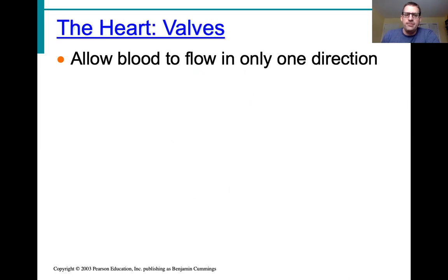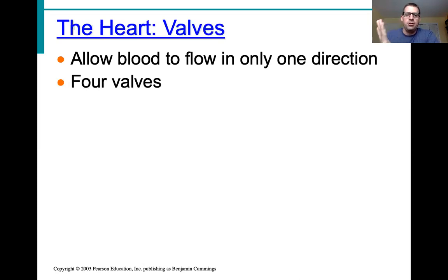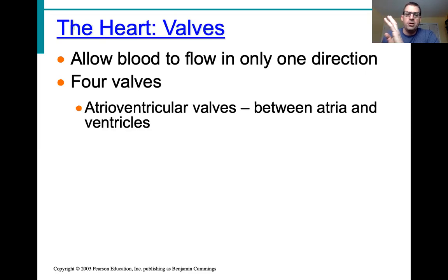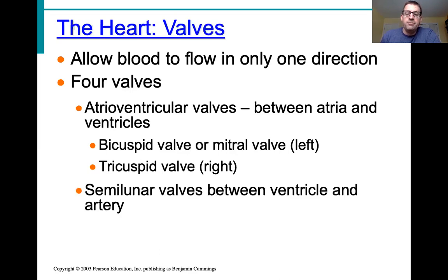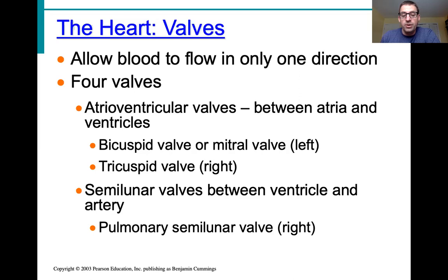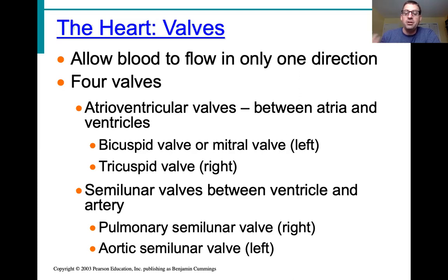The heart has valves that allow blood to flow in only one direction — there are four of them. The atrioventricular (AV) valves sit between the atria and ventricles: on the left side is the bicuspid valve, also called the mitral valve; on the right side is the tricuspid valve between the right atrium and right ventricle. Between the ventricles and their arteries are the semilunar valves: the pulmonary semilunar valve between the right ventricle and pulmonary trunk, and the aortic semilunar valve between the left ventricle and the aorta.